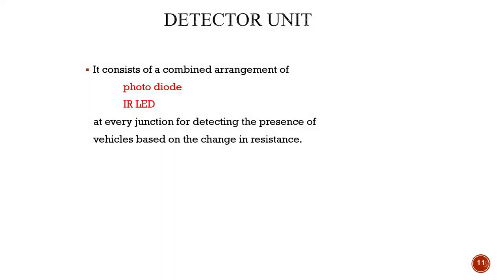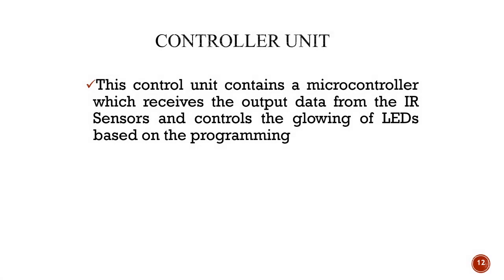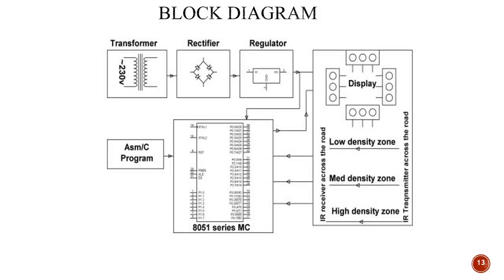The detector unit uses an IR sensor and a photodiode placed at every junction to detect the presence of vehicles based on the change in resistance, and to determine whether traffic is low, medium, or high density. The controller unit contains the 8051 microcontroller, which receives the output data from the IR sensors. Based on the input from the infrared sensor, the microcontroller controls the glowing of the LEDs through programming.